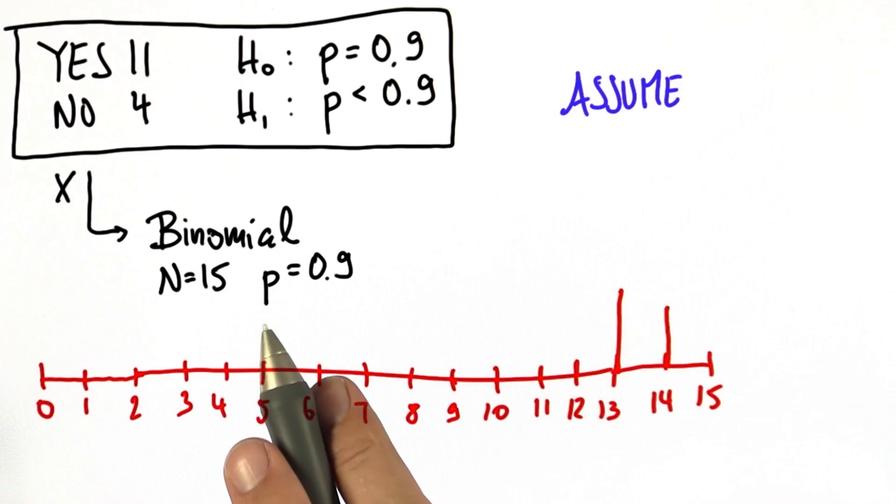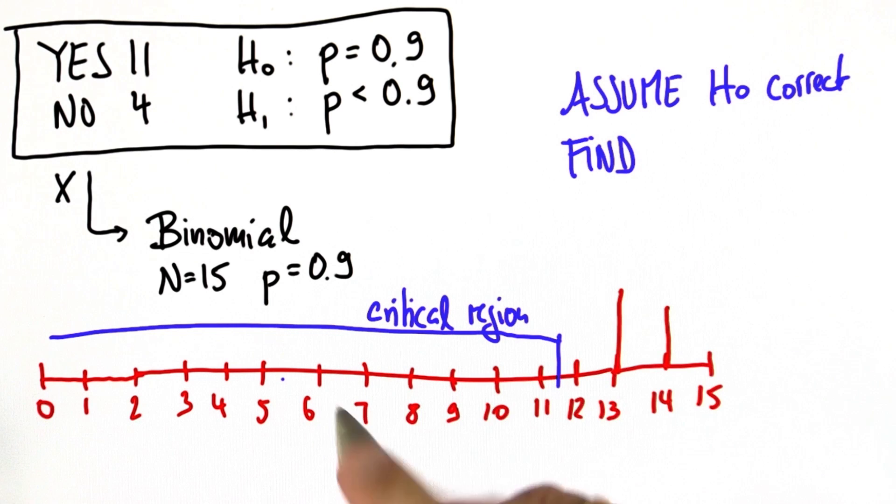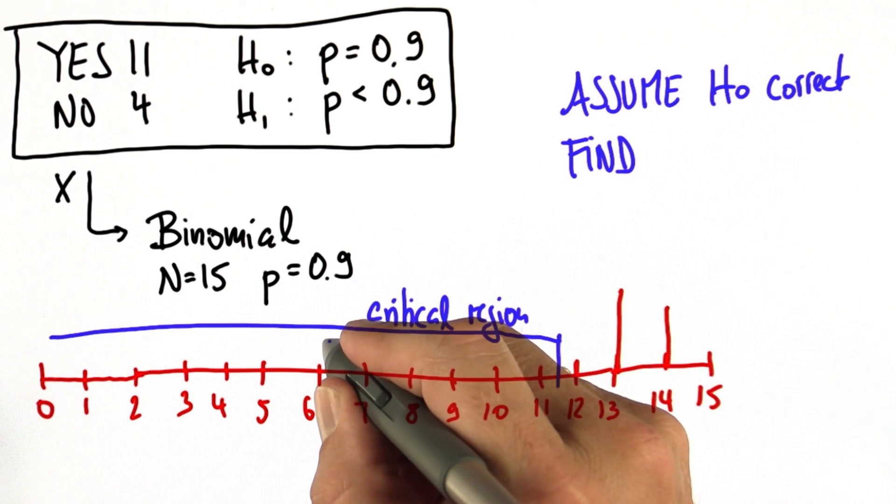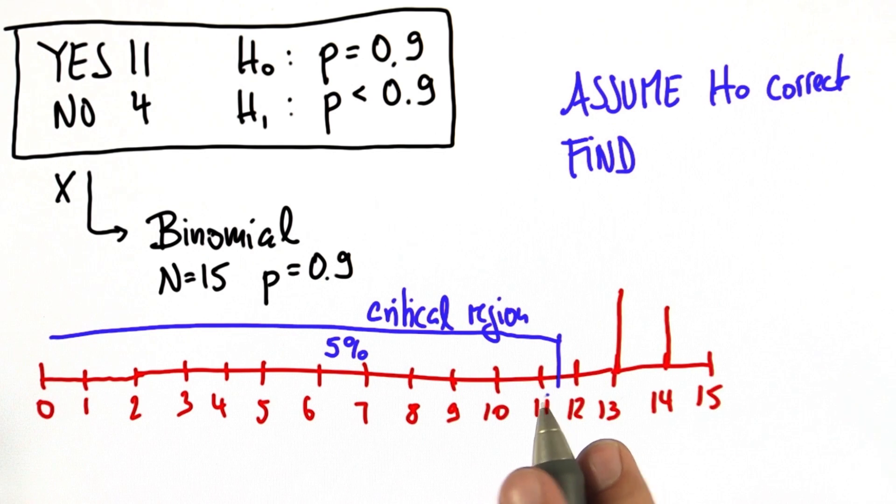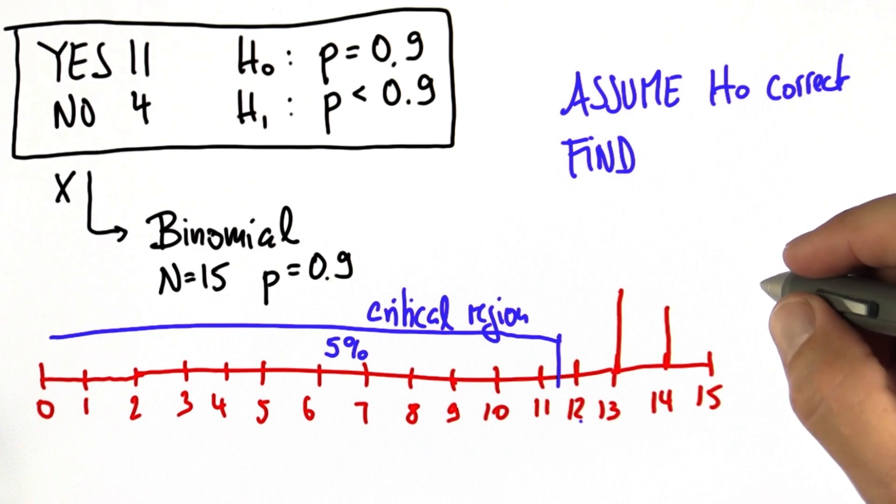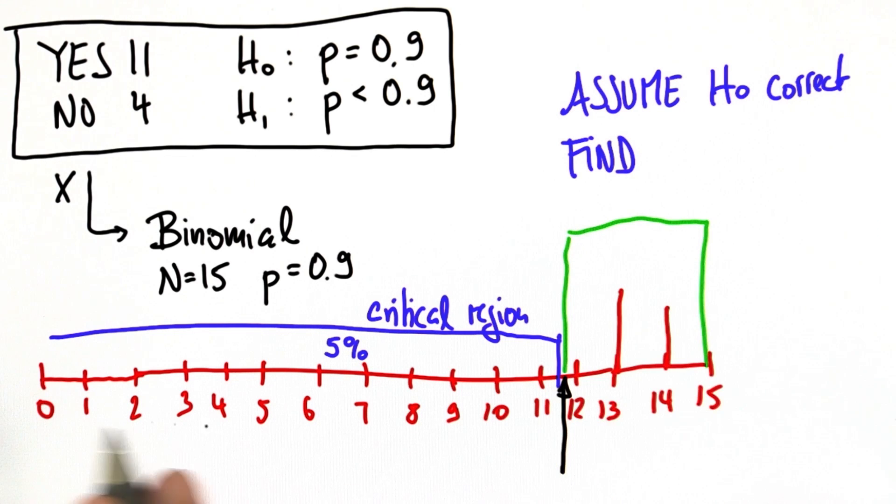The key is assume that H0 is actually correct. So the probability is 0.9. Then find what's called a critical region under which 5% or less of the total probability of this binomial resides. Put differently, you will place a marker over here that separates outcomes that invalidate the hypothesis and outcomes that validate the hypothesis so that all the outcomes together left of this marker collect in totality at most the confidence level.